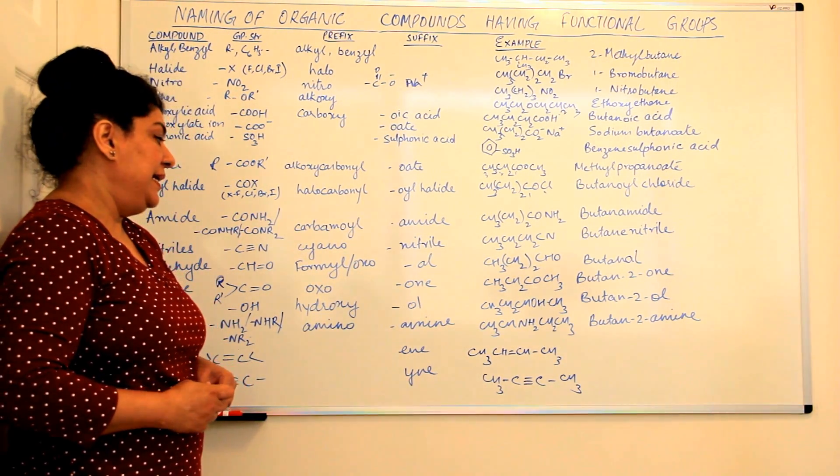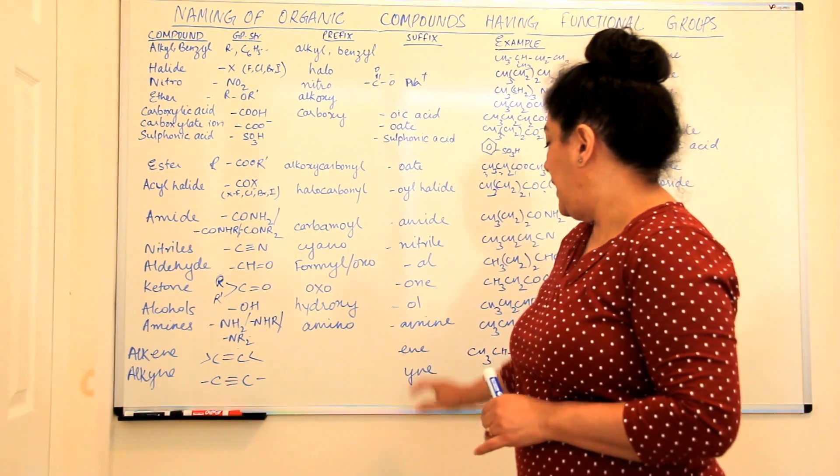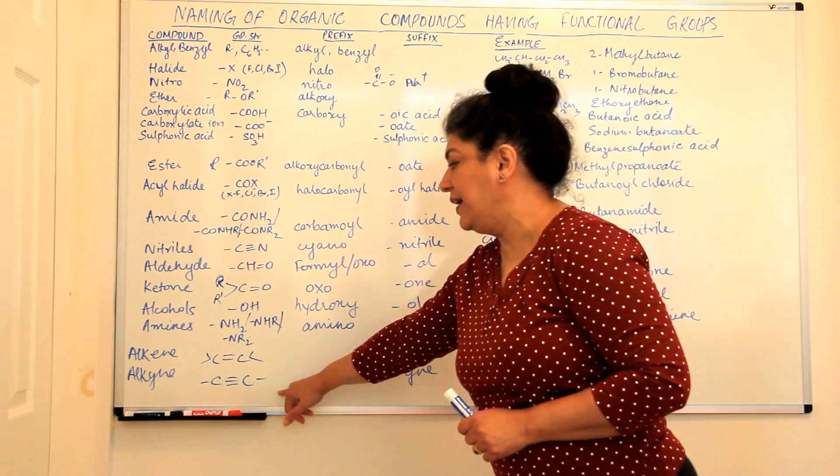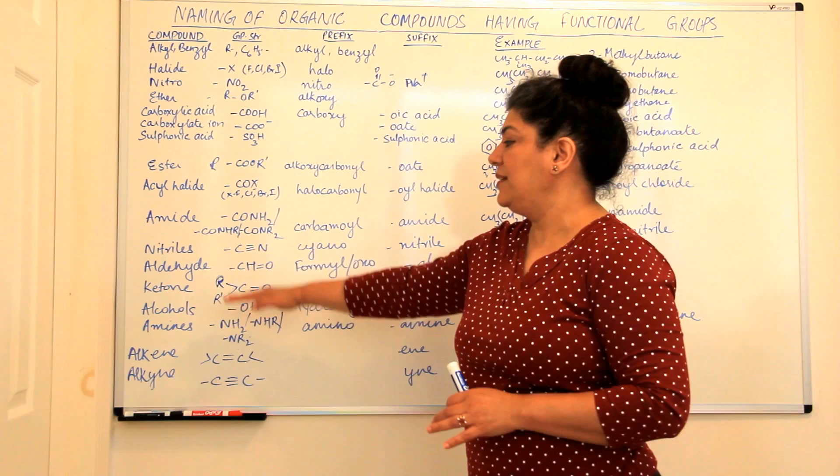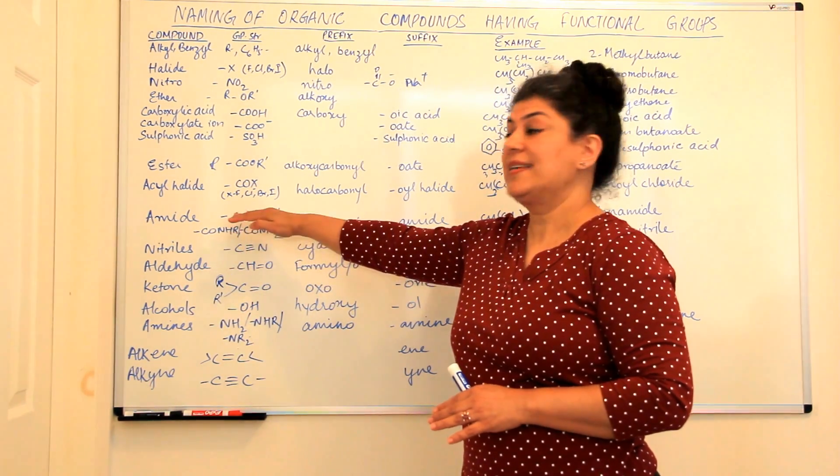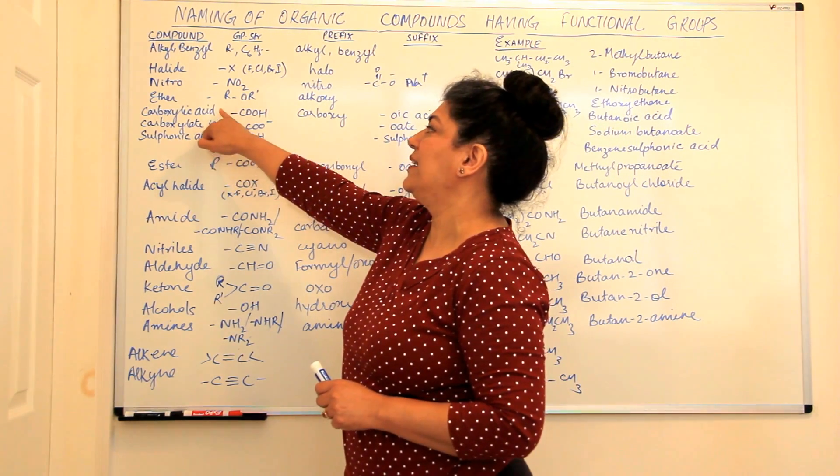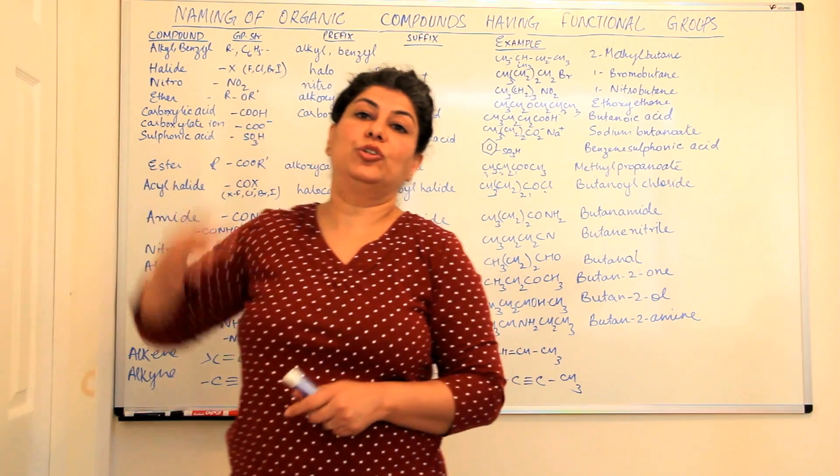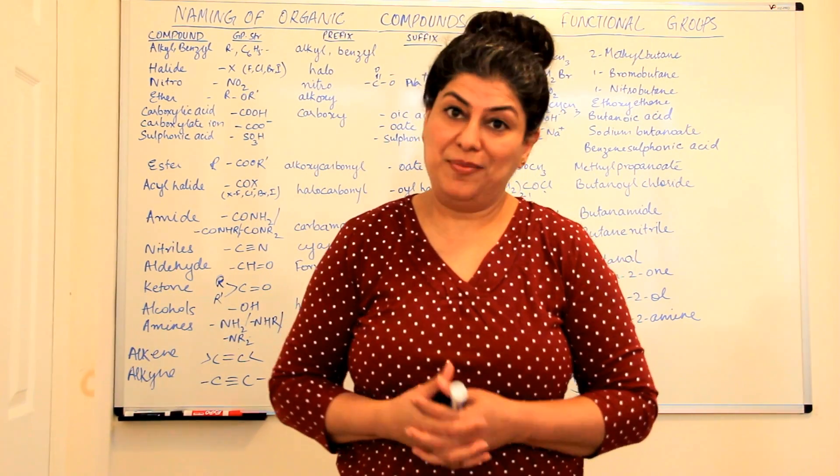So alkenes and alkynes show unsaturation in hydrocarbons and according to reactivity, alkynes are given least importance. Then come the alkenes, amines, alcohols, ketones, aldehydes, nitrides, amides, acyl halides, esters, sulconic acid, carboxylate ion and carboxylic acid. They come on the top of the reactivity and hence they are given the most importance.